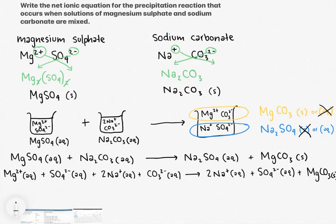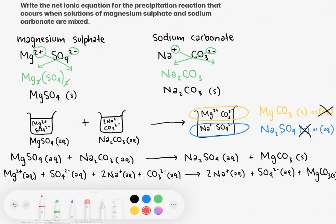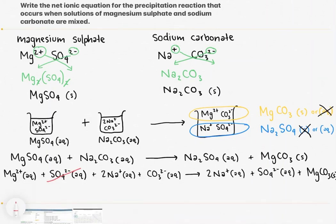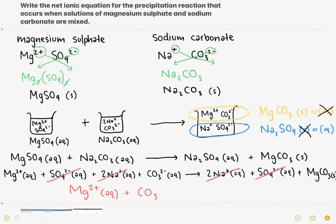We cancel out any spectator ions: the sulfate ion appears on both sides, so we cancel it; the sodium ions also appear on both sides, so we cancel them. We are left with magnesium ions and carbonate ions forming solid magnesium carbonate. Always remember to write your states. The final net ionic equation is: Mg2+ (aqueous) + CO3 2- (aqueous) → MgCO3 (solid). That is the final answer for the net ionic equation of this precipitation reaction.